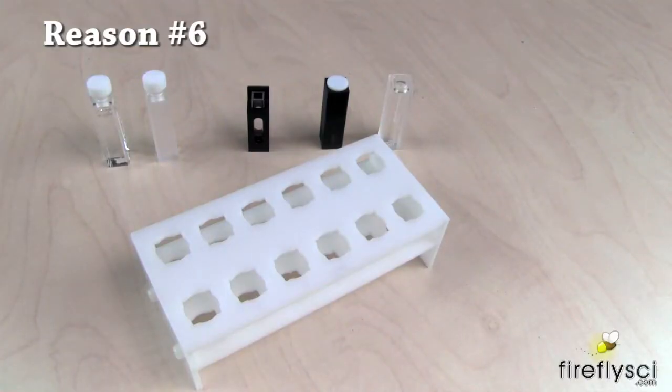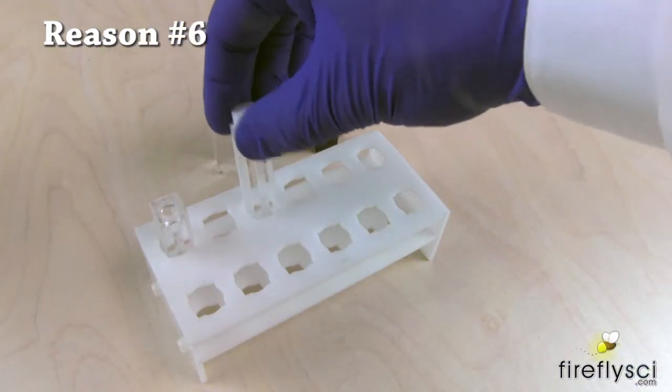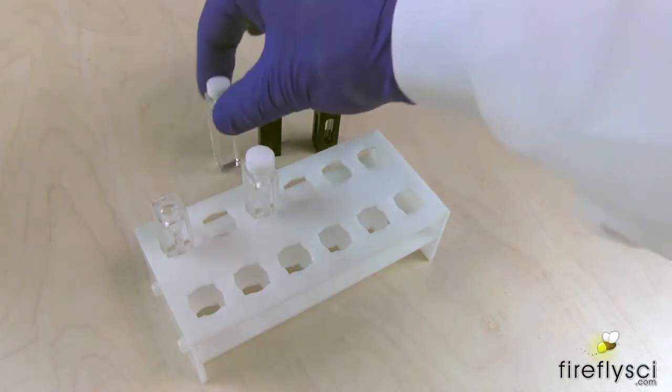Number six, keeps the cuvettes off the lab bench. Keeping your cuvettes off the lab bench will help protect them against contamination. When a cuvette is in a cell rack, it is elevated off the lab bench.